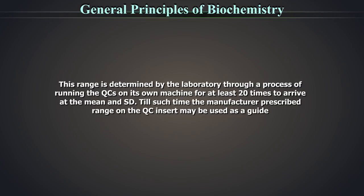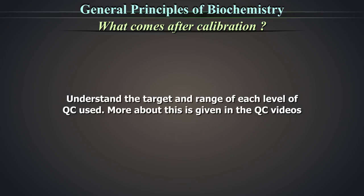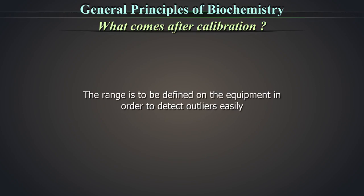Till such time, the manufacturer prescribed range on the quality control insert may be used as a guide. Understand the target and range of each level of QC used. More about this is given in the QC videos. This range is to be defined on the equipment in order to detect outliers easily. Reconstitution of QCs are explained in the QC module.